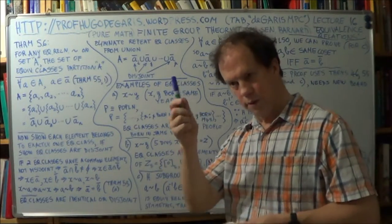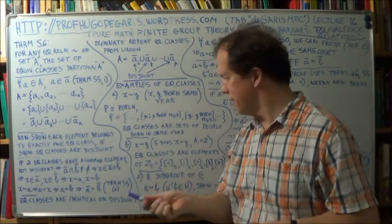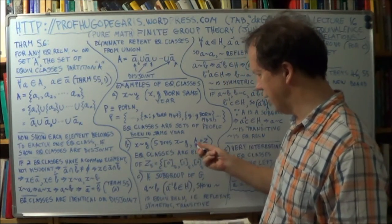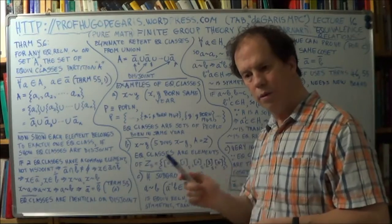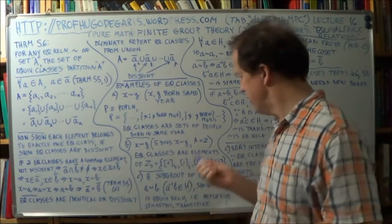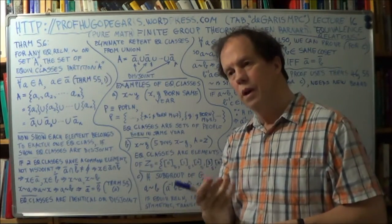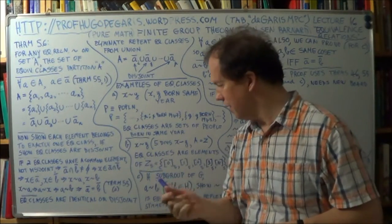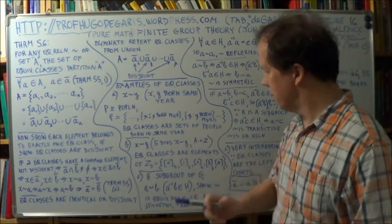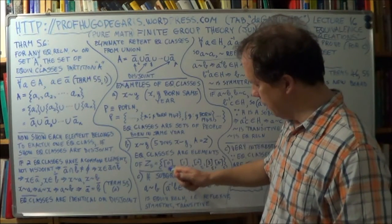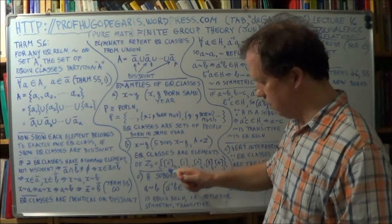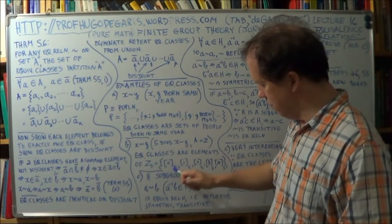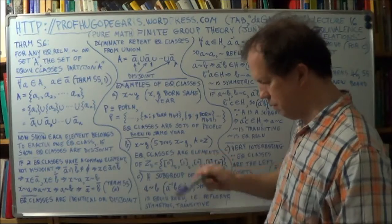Well, they are the numbers that have this property. So, for example, it would be the set. Remember it's a subset. Equivalence classes are the subset of your original set A. And they're all equivalent. So that would be the numbers, the integers. 0, plus minus 5, plus minus 10, plus minus 15, and so on. And now all those numbers are this. They're all congruent to 0 mod 5.